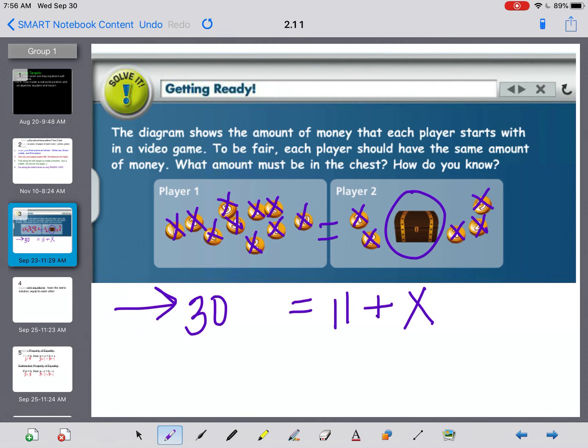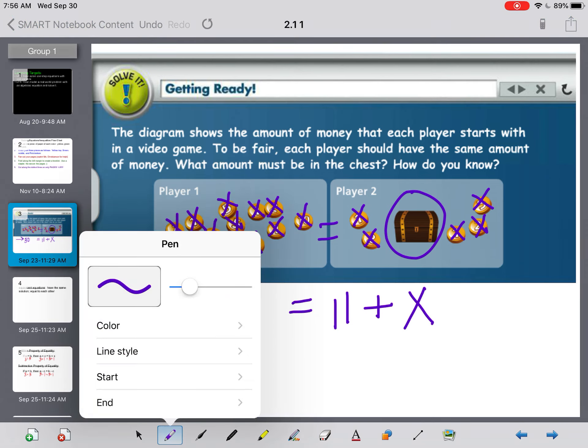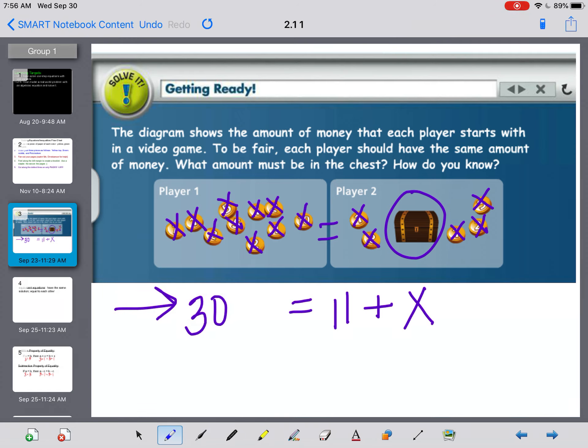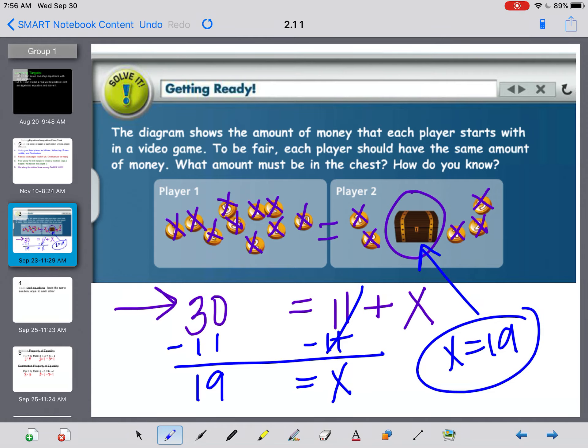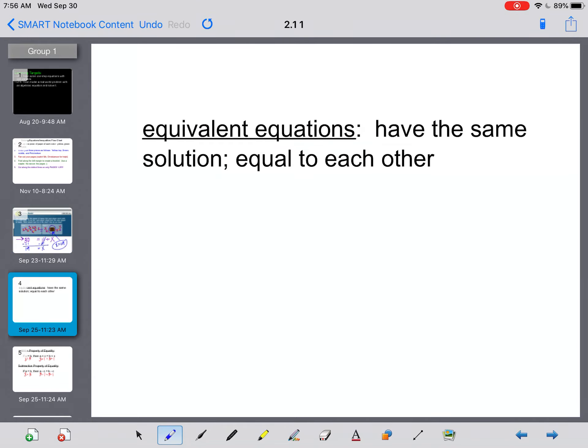This is our equation to figure out what's in that chest: 11 + X = 30. If I know that they have 11, I can take that away from 30. I'm going to subtract 11 from both sides, and 30 minus 11 is 19. All I have left on this side is X. So that means in the treasure chest, there must be 19 coins if both of these players have equal amounts.